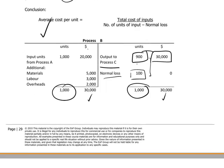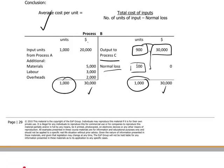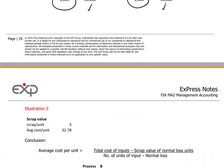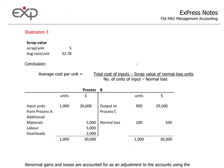Now let's make the situation a bit more complicated by adding in, in illustration 3, the fact that scrap value can be obtained for those 100 units that were lost in the production process. The $5 of scrap value means now that our scrap value of normal loss units can be deducted from the total cost of inputs.